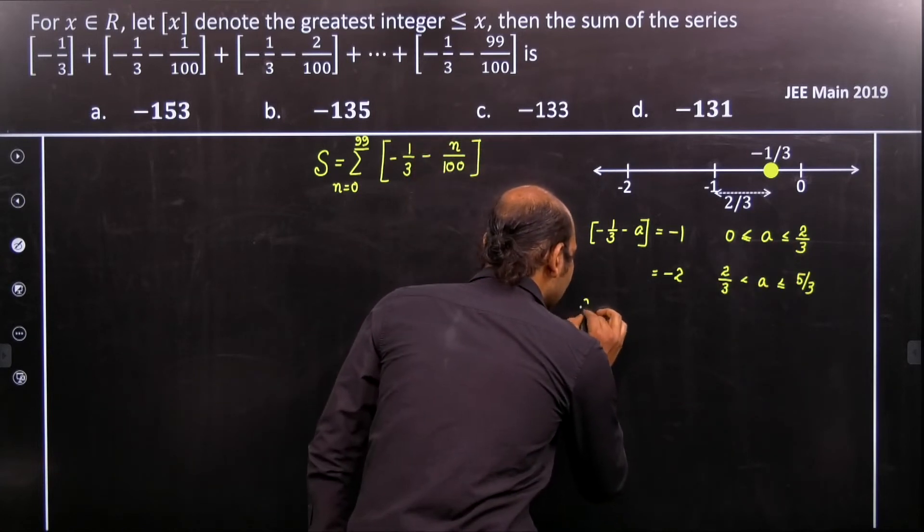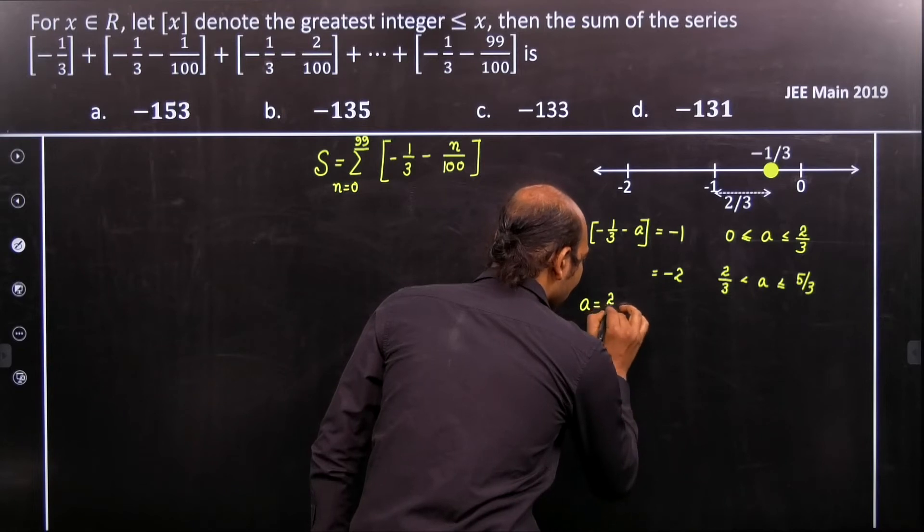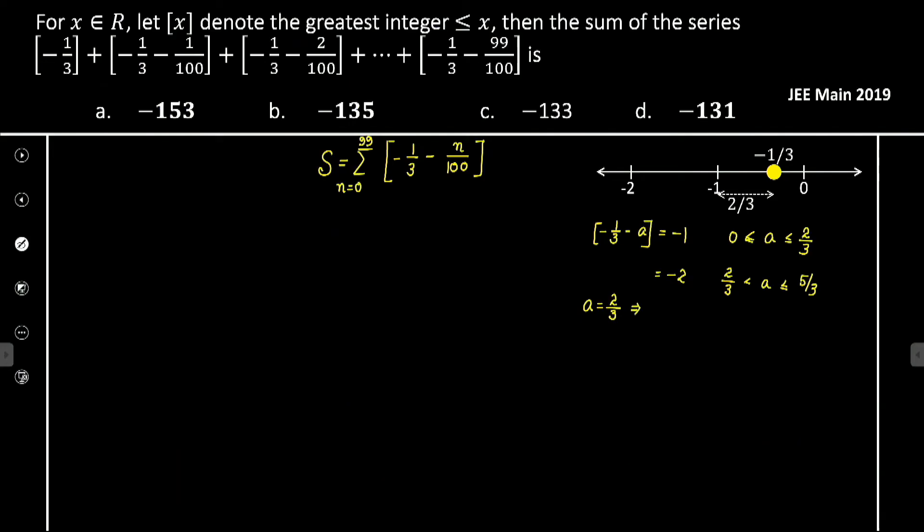That implies n equals 200 by 3, so that gives you approximately 66.6.